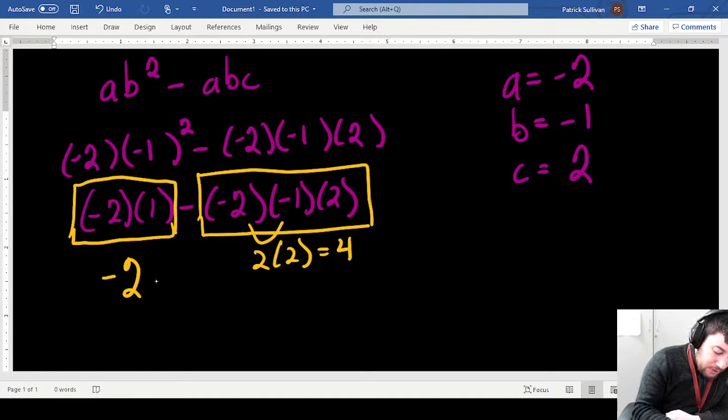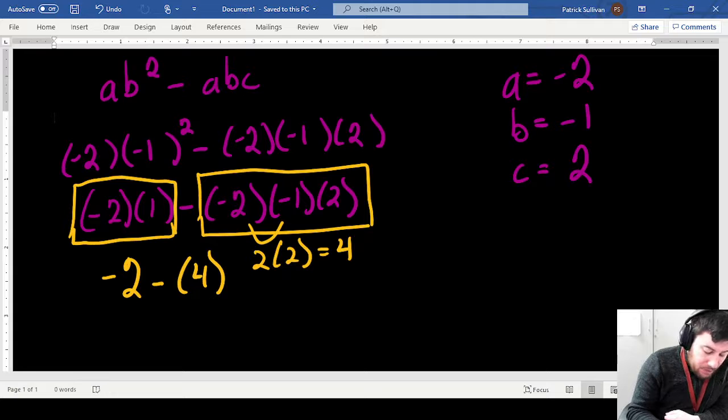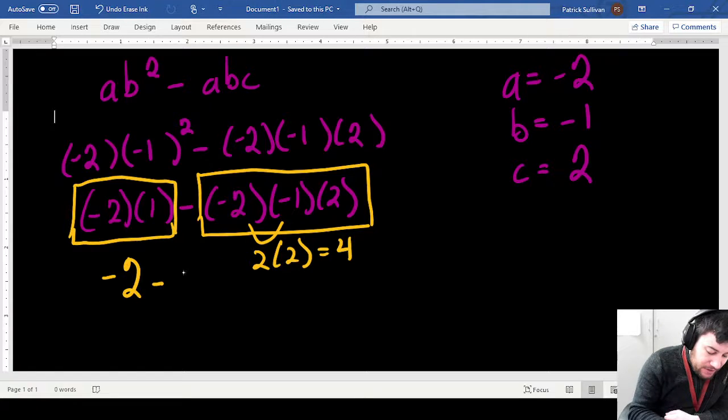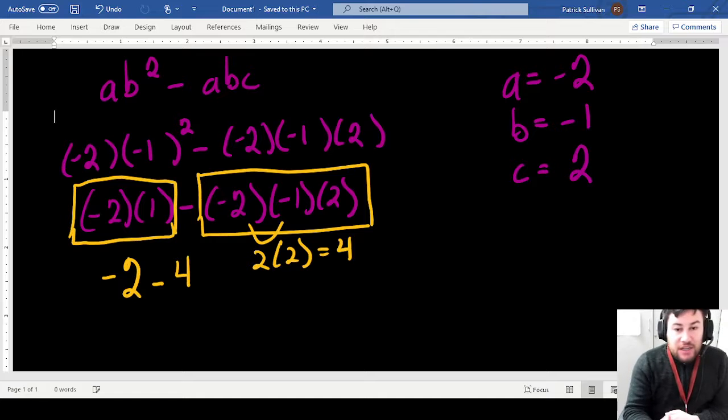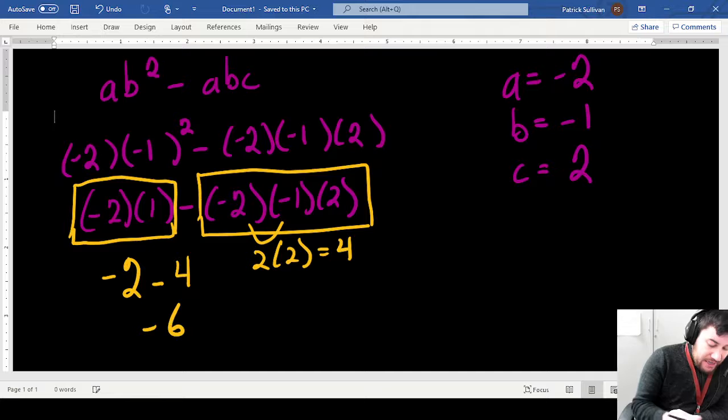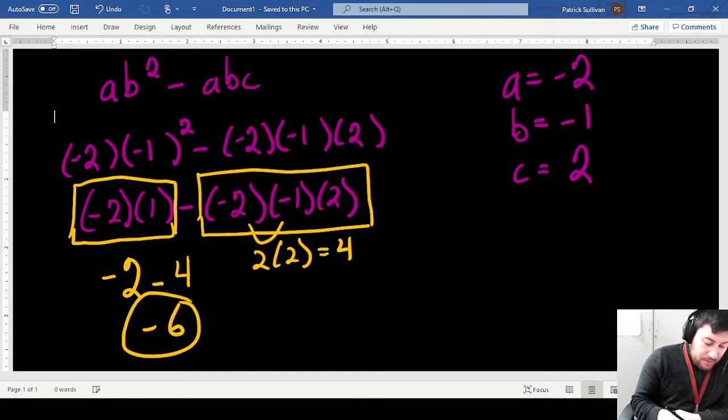So now I have 2 minus 4. I put parentheses, but you don't necessarily have to. If it's easier for you to understand it this way, then definitely go ahead and do it that way. So now I have negative 2 minus 4. Again, this is something you always want to check with your calculator, but you should get negative 6 as your final simplified answer.